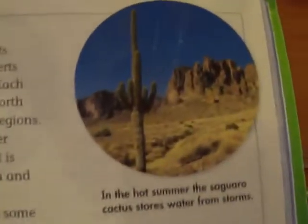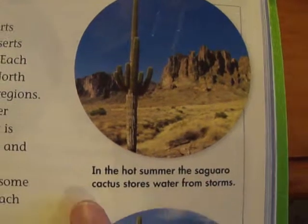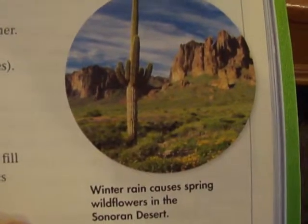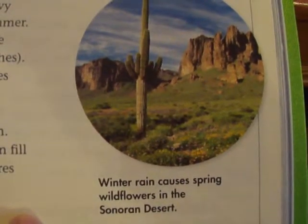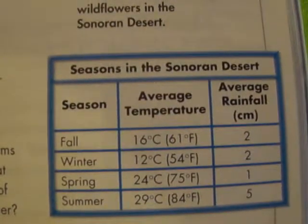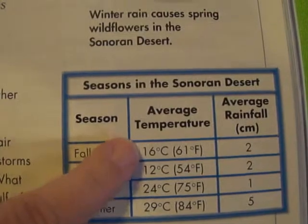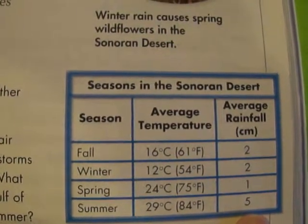In the hot summer, the saguaro cactus stores water from storms. Winter rain causes spring wildflowers in the Sonoran Desert. Here are the seasons in the Sonoran Desert — you can see all the seasons on the left with their average temperature and average rainfall. Most of the rain comes in the summertime.